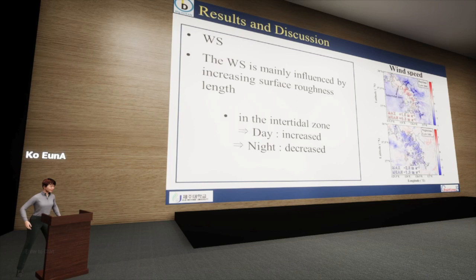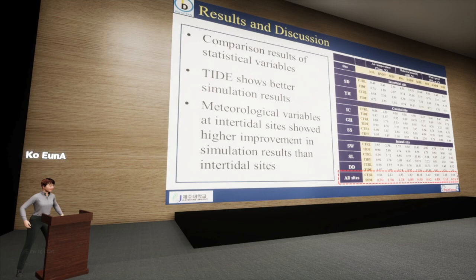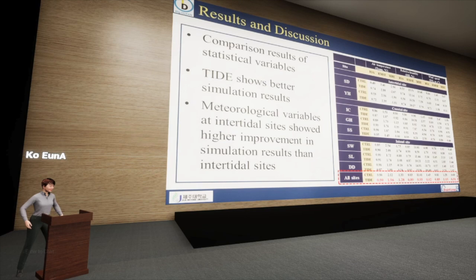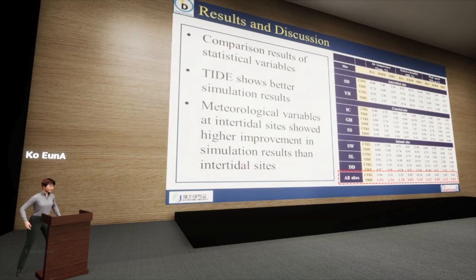We evaluated model performance with and without time-varying land cover. Statistical analyses were performed on the meteorological variables at the intertidal and inland monitoring sites during the study period. Overall, the meteorological variables at all monitoring sites were slightly better simulated in the tidal simulation than in the control simulation. Additionally, the accuracy of most meteorological variables at the intertidal sites showed greater improvement than those at the inland sites. Therefore, it is reasonable to consider the time-varying land cover in the intertidal zone produced by the coupled model to accurately simulate meteorological conditions in the coastal area.